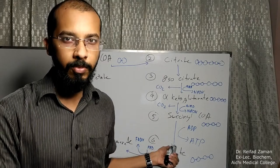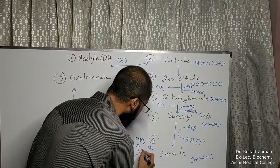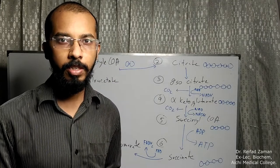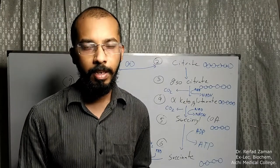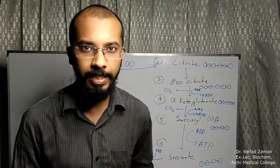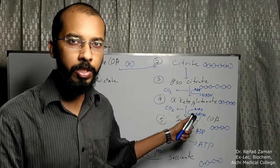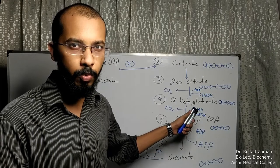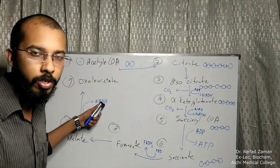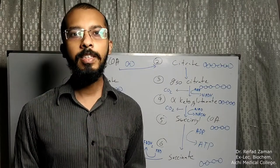Then the fumarate turns into malate without much change. And the malate loses hydrogen to turn into oxaloacetate, which again produces NADH. Also notice that following the formation of succinyl-CoA, no carbon dioxide is lost. So all these compounds — succinate, fumarate, malate, and oxaloacetate — are four-carbon compounds. And that is the end of the reaction.